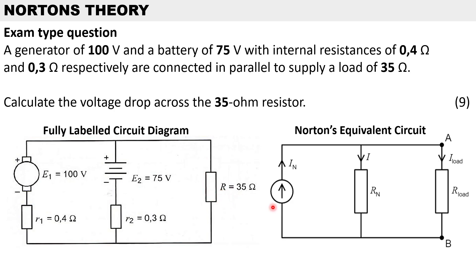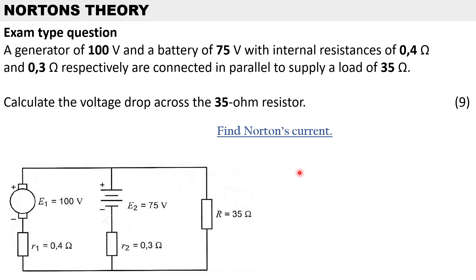To do our calculations according to Norton's theorem, we can use Norton's equivalent circuit to help understand the circuit. We have a single current source known as Norton's current, a single resistor known as Norton's resistance, connected in parallel to the load resistance. The first step is to find Norton's current, using the voltage and internal resistance to solve for IN.